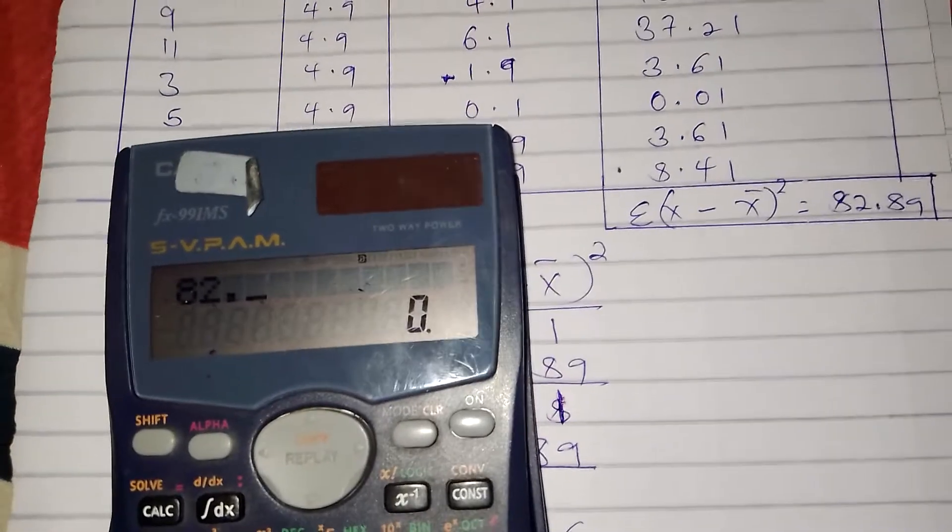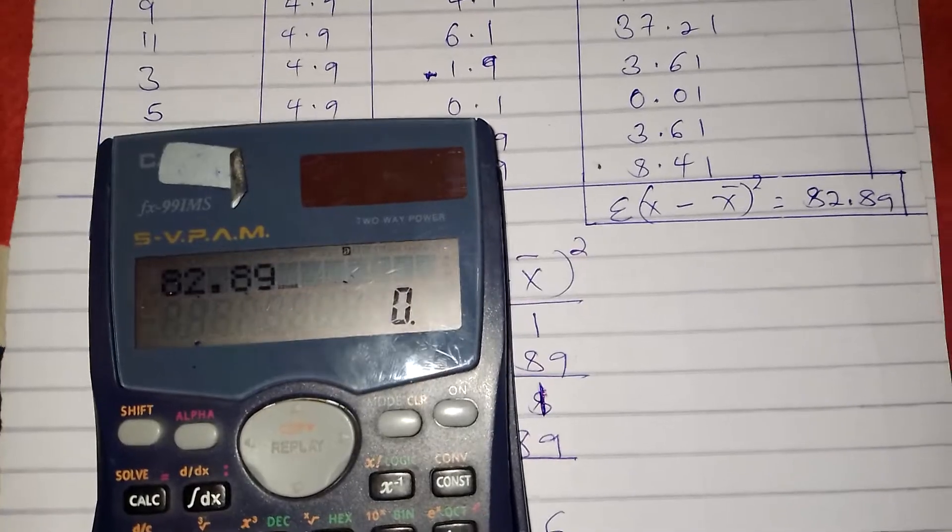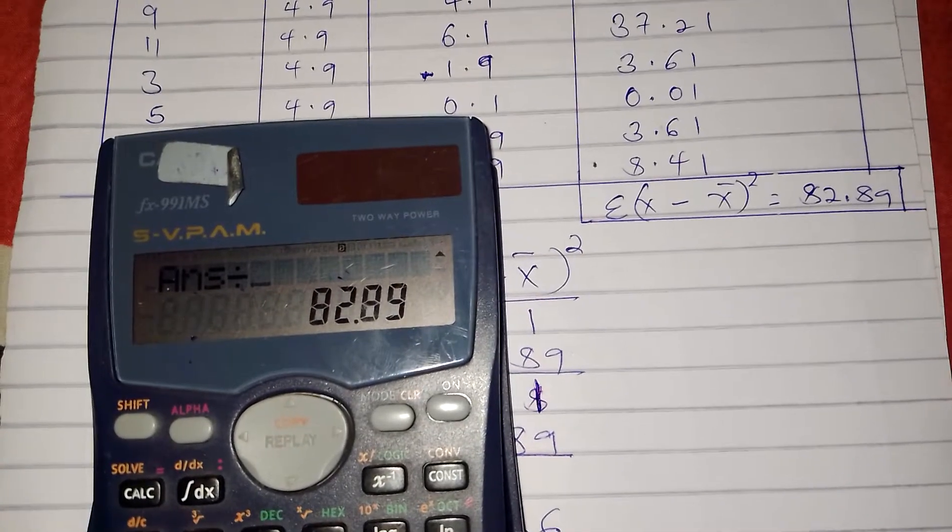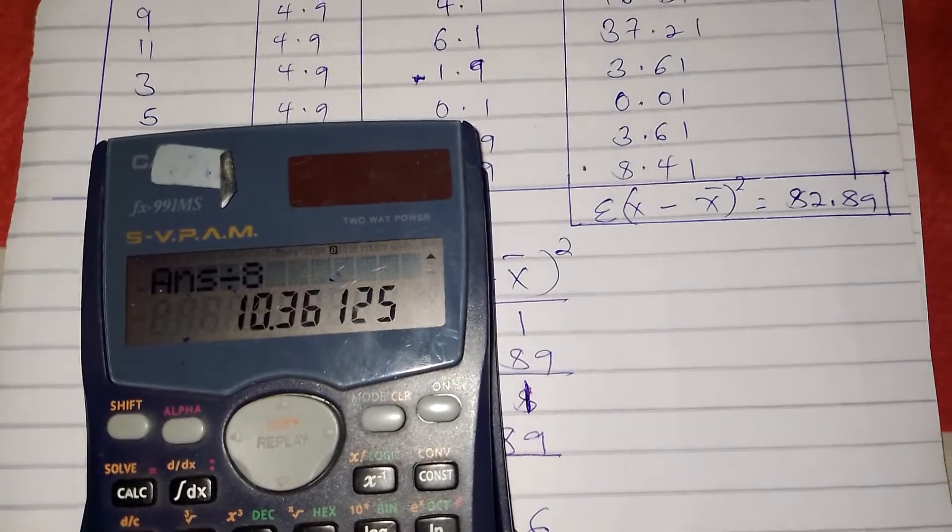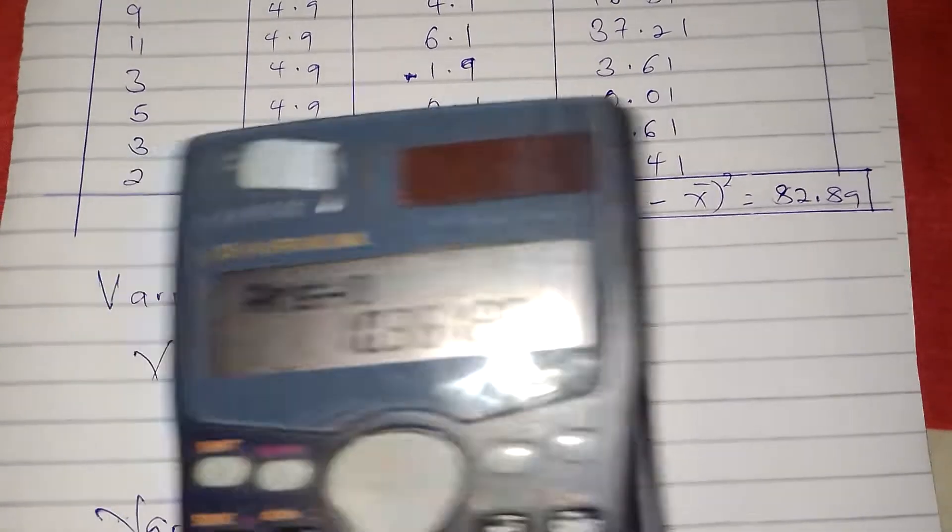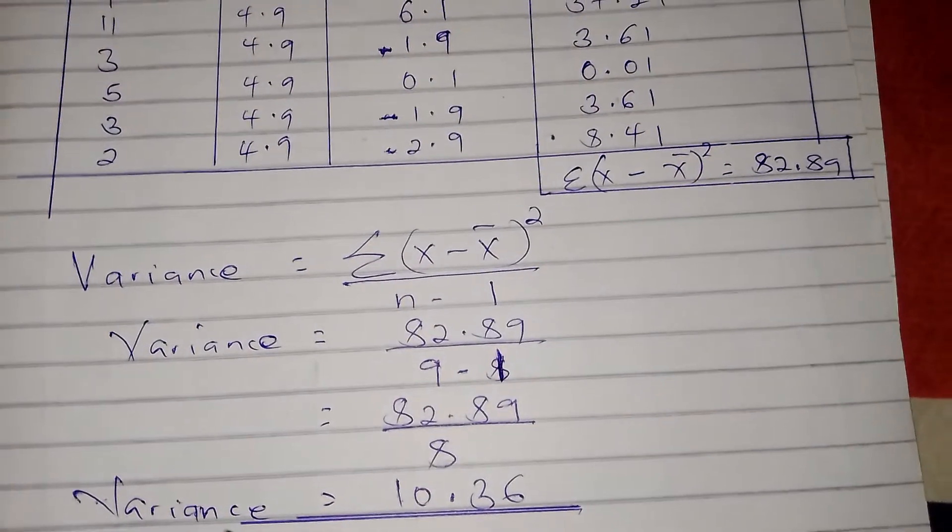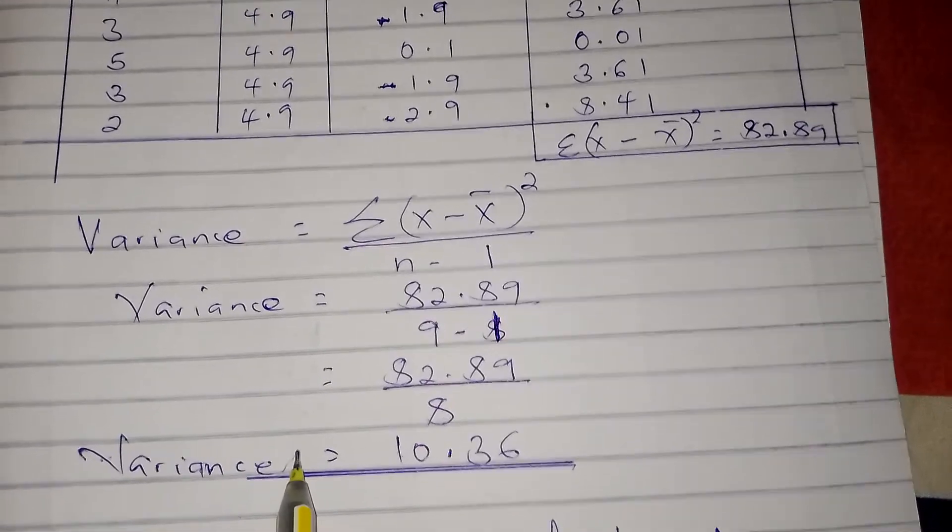After that we divide 82.89 by 8, we get 10.36. So 10.36 is our variance.